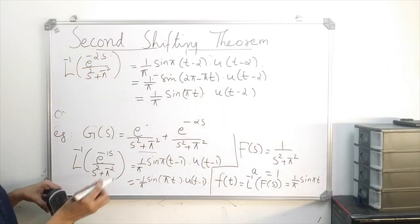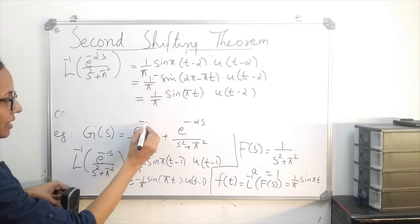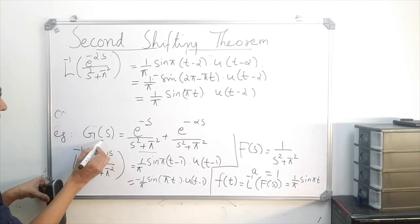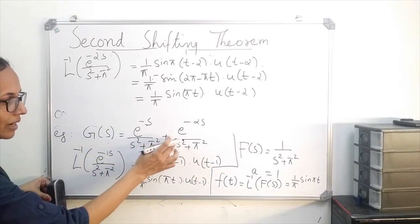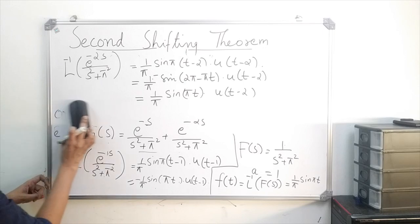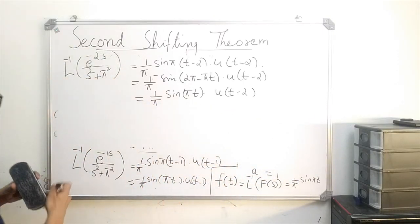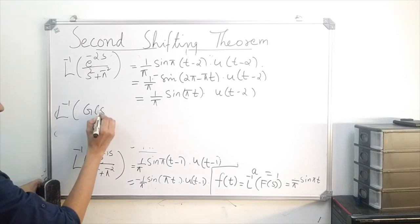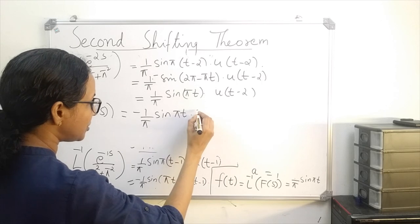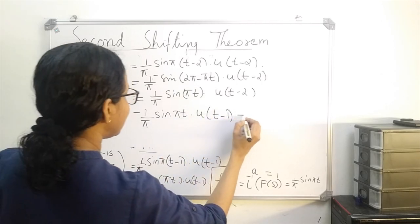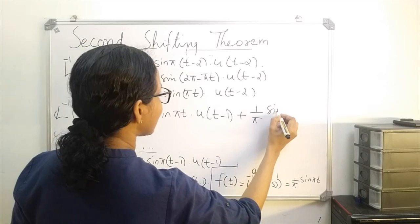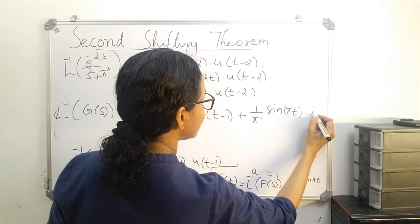So we have the inverse of both terms. The inverse Laplace of g of s equals the inverse Laplace of the first term plus the inverse Laplace of the second term. Therefore, the inverse Laplace of g of s is minus 1 over pi times sin pi t times u of t minus 1, plus 1 over pi times sin pi t times u of t minus 2.